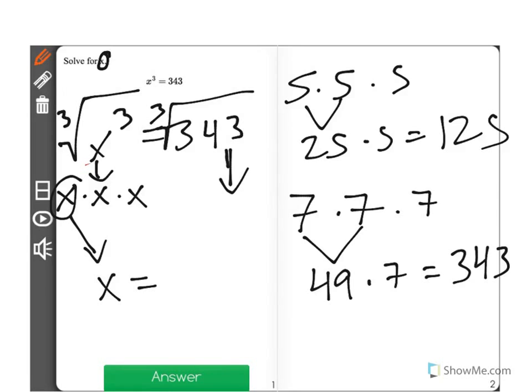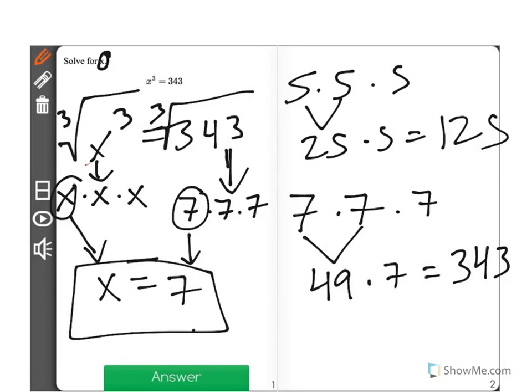So the cube root of 343 is one out of the three factors right here, it's 7. So when we're solving for x, in this case x is equal to 7. We do that by finding the cube root.